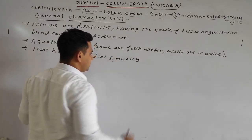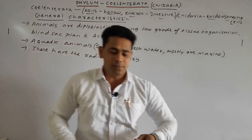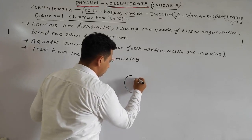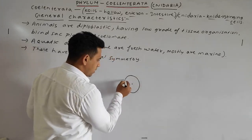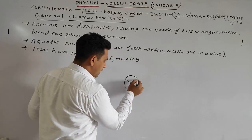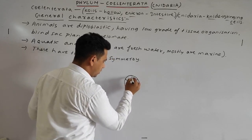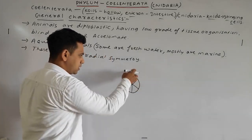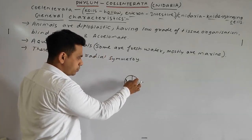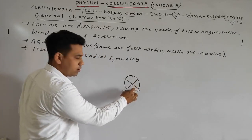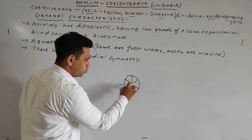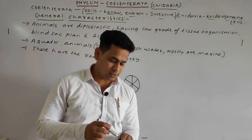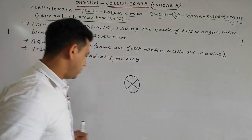Radial symmetry means: suppose this is the organism, and through the center - in any plane when you pass through the center it will divide the organism into two equal halves. Whichever plane you choose, it divides into two equal halves. This is the main characteristic of Coelenterata - they have radial symmetry.